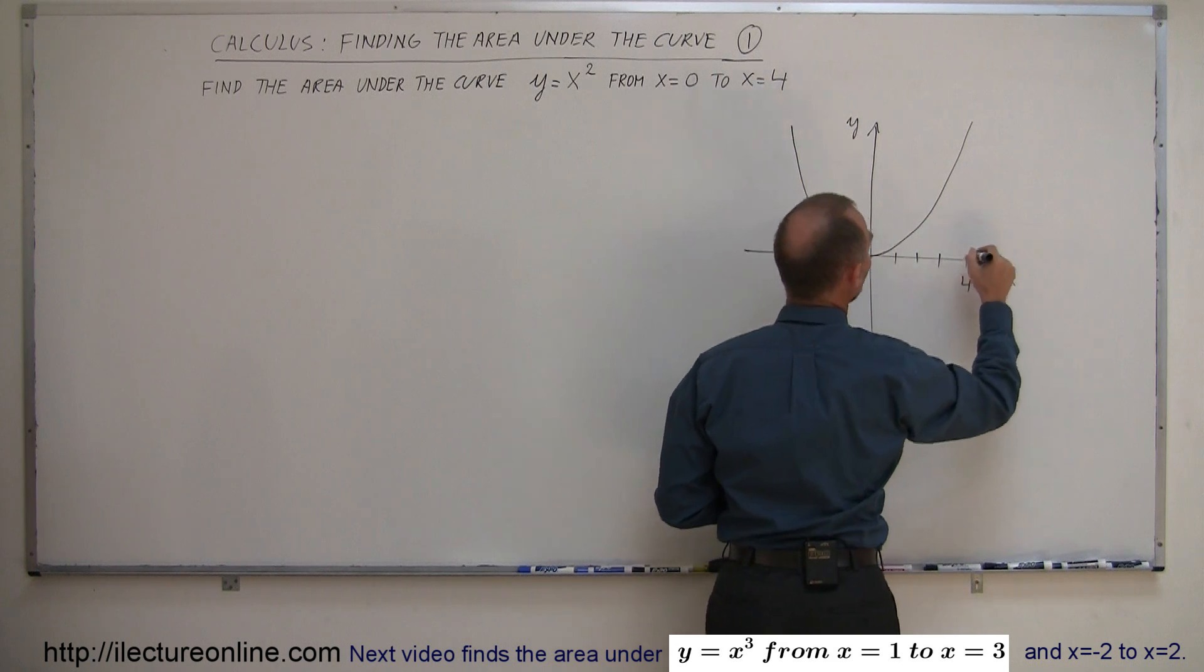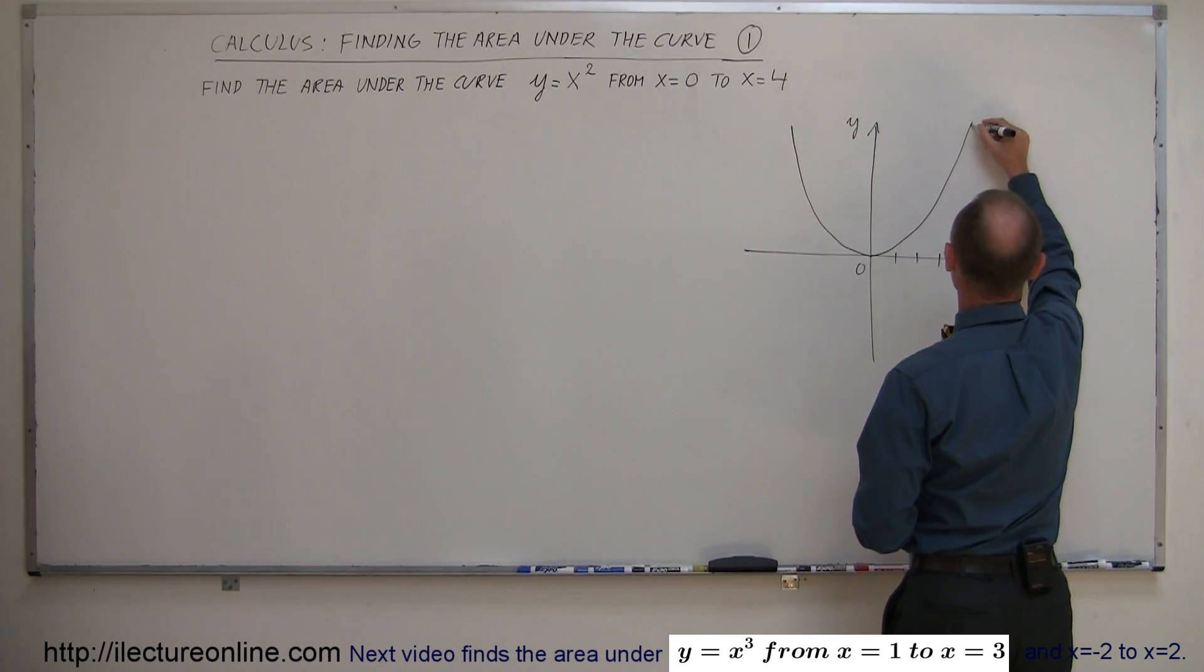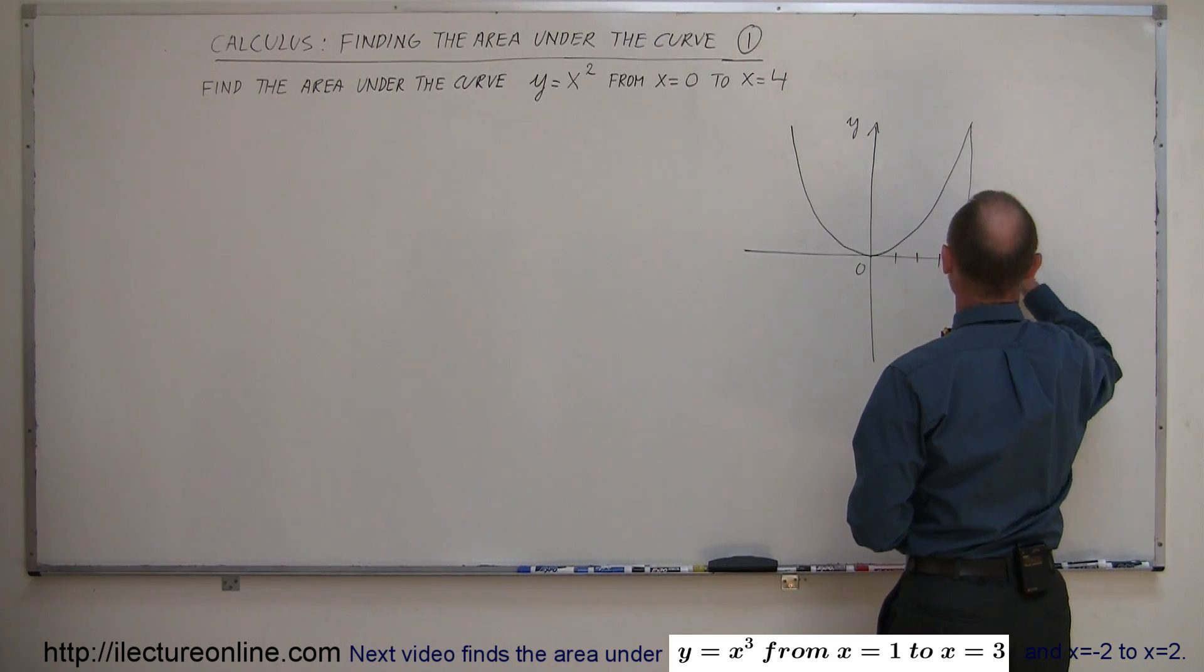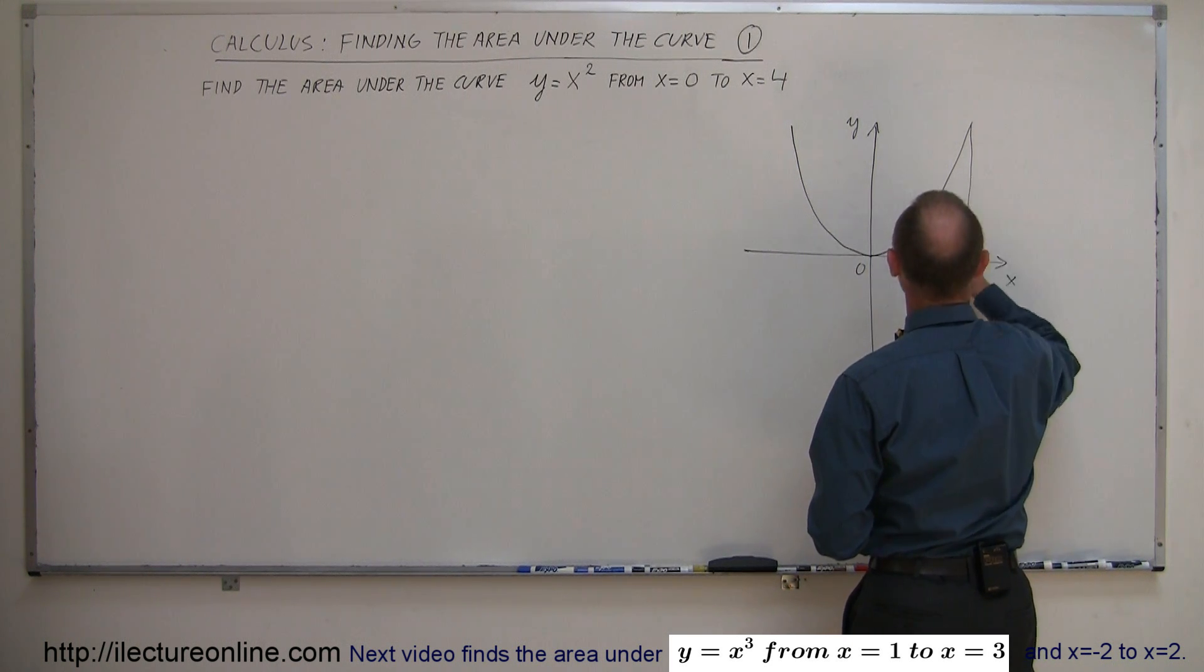So if we draw a line from the curve down to x = 4, then this is the area that we're looking for.